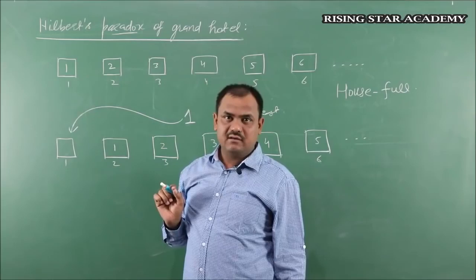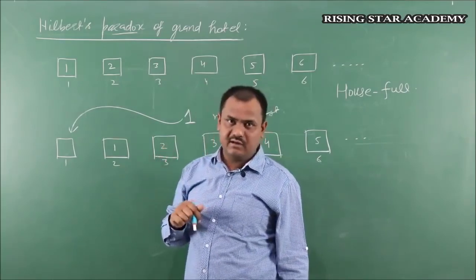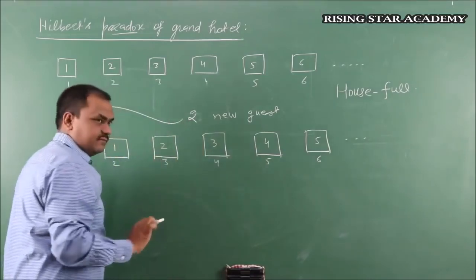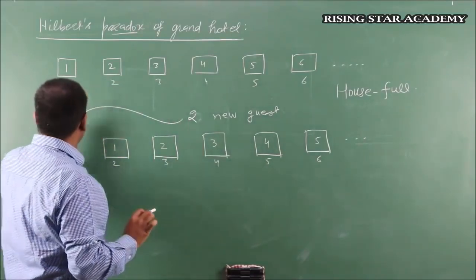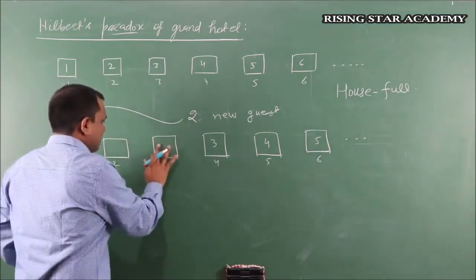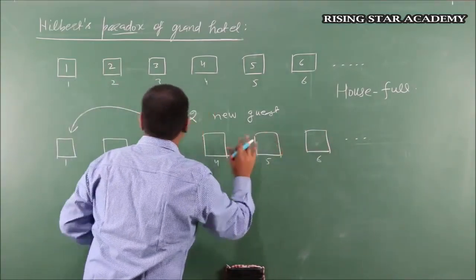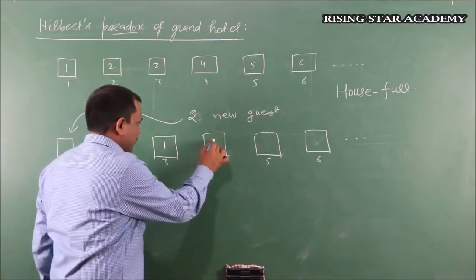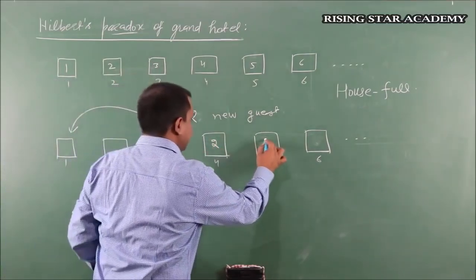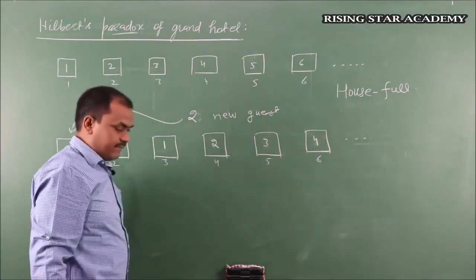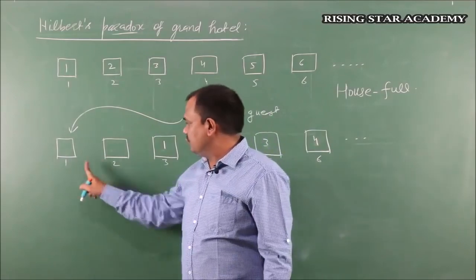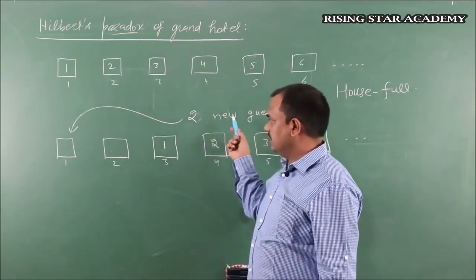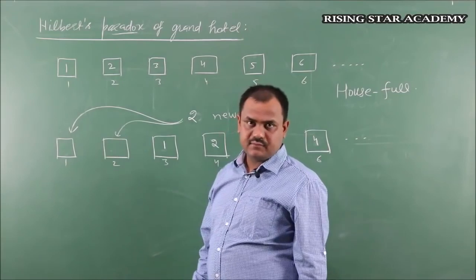Hilbert's dilemma was whether what is happening is correct or not. Hilbert went further. What if there are two new guests? First make two rooms empty: move guest number one to room three, guest number two to room four, guest three to room five, and so on. Now the first two rooms are empty and you can adjust your two new guests, one in each room. This was the paradox — a hotel already house full, yet we adjusted two new guests.